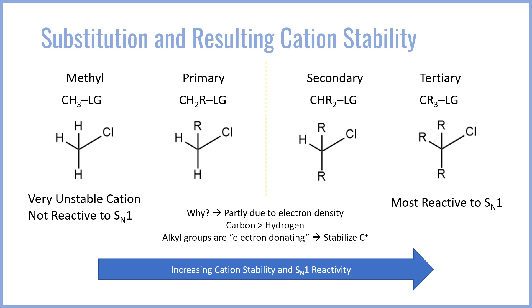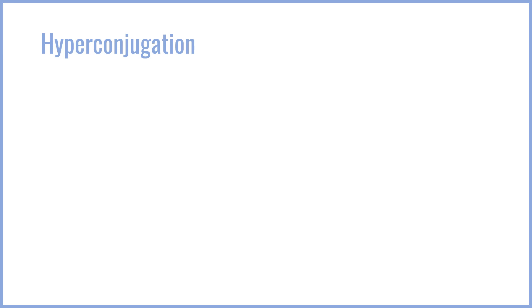Why does substitution lead to greater cation stability and greater SN1 reactivity? Part of it has to do with electron density. Carbon has far more electrons than does hydrogen — hydrogen only has one electron, it's very non-polarizable, and it cannot donate very much electron density. Carbon has a lot more, so you can think of a reverse inductive effect through the single bonds, where alkyl groups are sort of electron-donating. Because they are not very electronegative and they have about the same electronegativity as the carbon with the cation, the electron density can be shared a bit more between those single bonds, and that helps stabilize the carbocation.